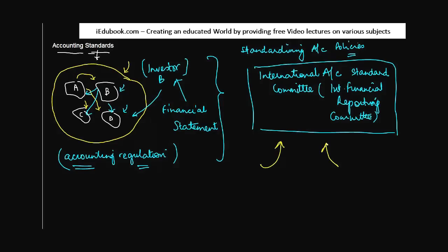Various countries own independent regulatory bodies. Let's say for example in India we have the Institute of Chartered Accountants of India. So the Institute of Chartered Accountants of India is actually a member of IFRC, if I may call it international financial reporting committee.